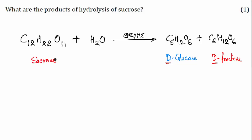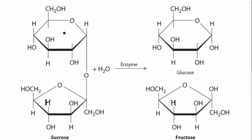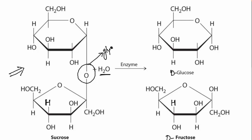Don't forget the D prefix — the products are D-glucose and D-fructose. The bond between them in sucrose is called the glycosidic linkage. Sometimes they ask about glycosidic linkage — this is that bond.